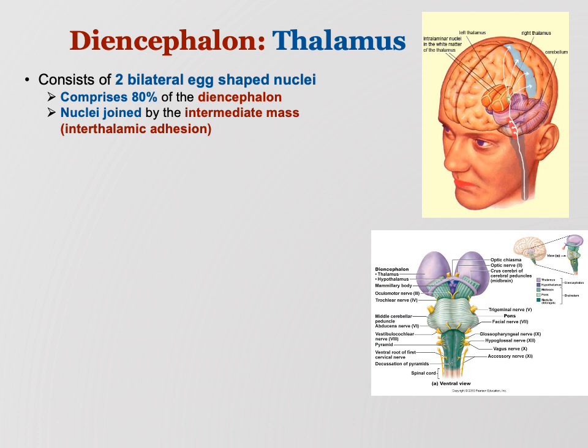The two nuclei are joined by an intermediate mass, sometimes called the interthalamic adhesion. For the lab I'll call it the intermediate mass — it's a connecting tube between the two halves of the thalamus. One of the hard things with the brain is looking at two-dimensional diagrams and putting them together in 3D. In the lab, the intermediate mass looks like just a little circle, but it's actually a whole big tube connecting the two halves. It just takes practice.